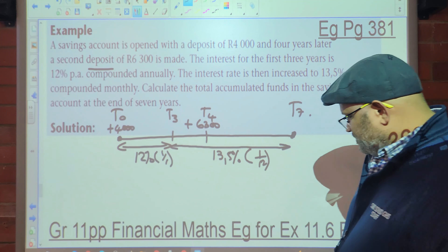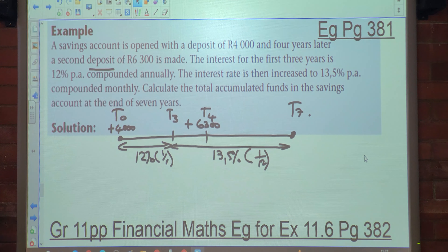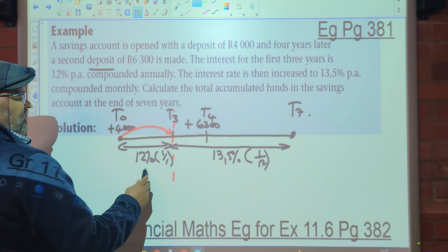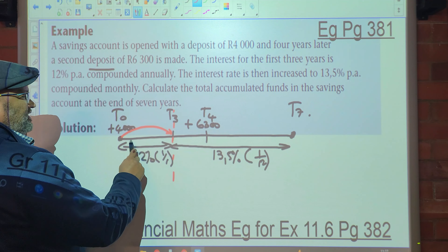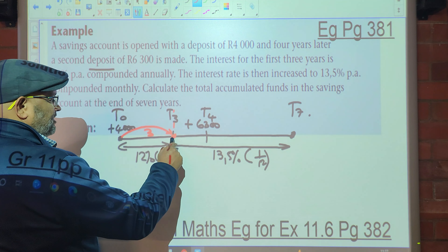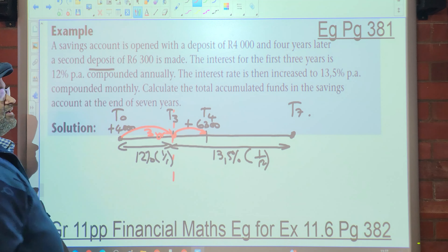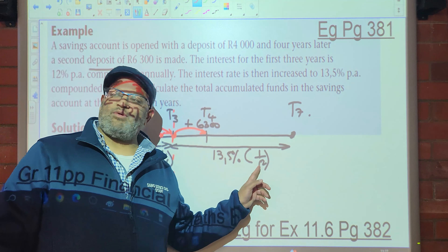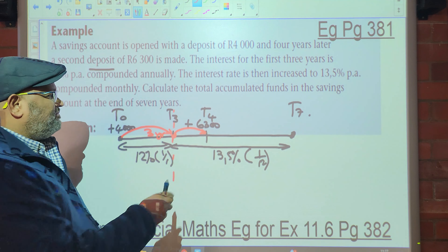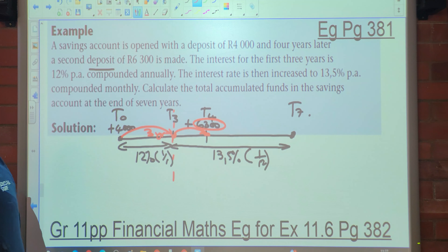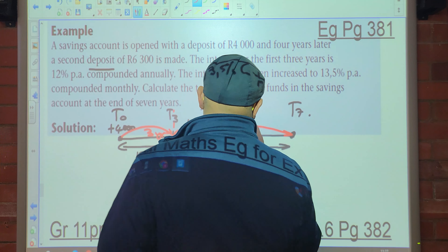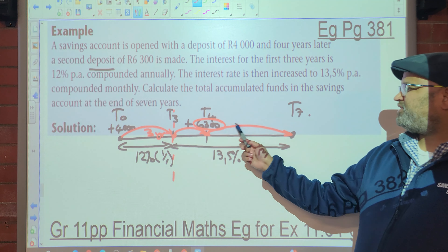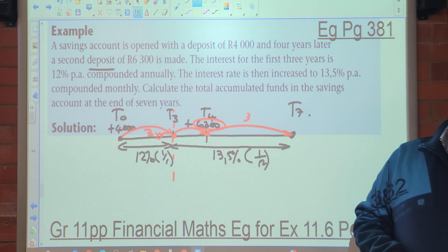There are many ways of doing this. One way: take R4,000 with the interest factor of (1 + 0.12) to the exponent 3, then take that answer and run the interest factor for one year — into (1 + 0.135/12) to the exponent 12 times 1. That answer, you add R6,300 as your new principal, then run the interest factor of (1 + 0.135/12) to the exponent 36. That's one way of doing it.